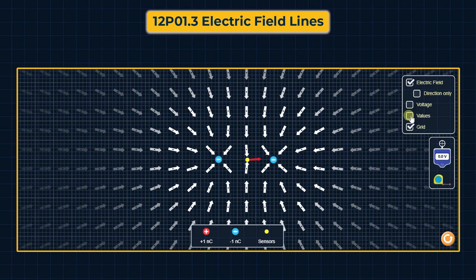At one point between the two positive charges, the electric field value is almost zero. Moving further, we can see that the direction of the electric field reverses to the left.